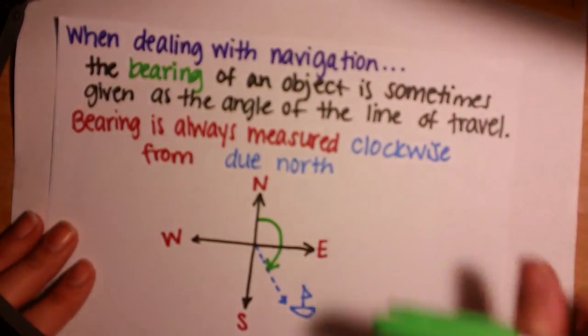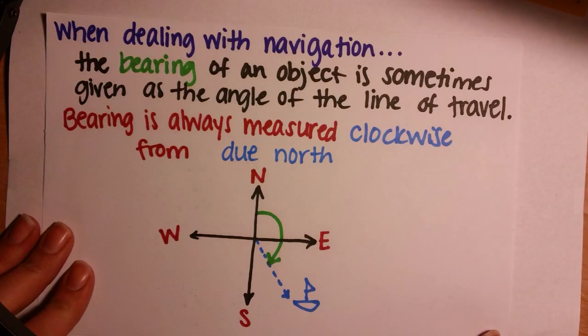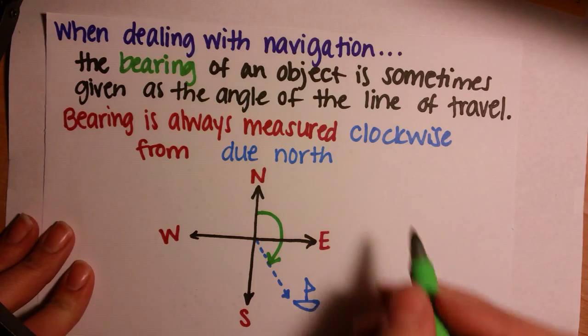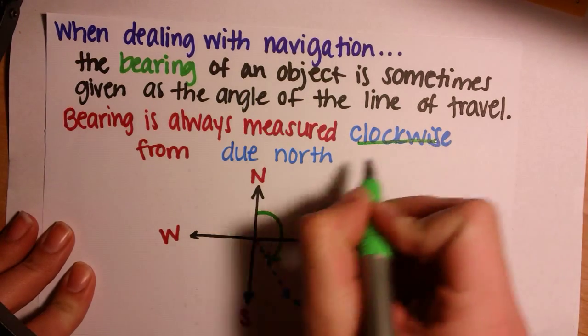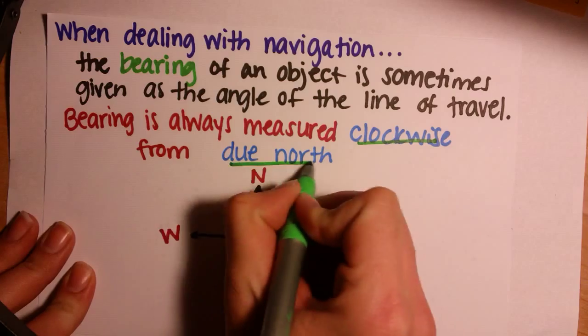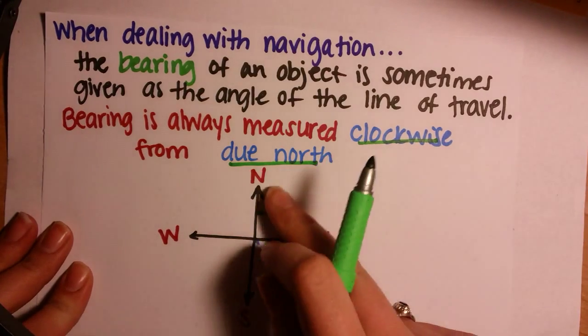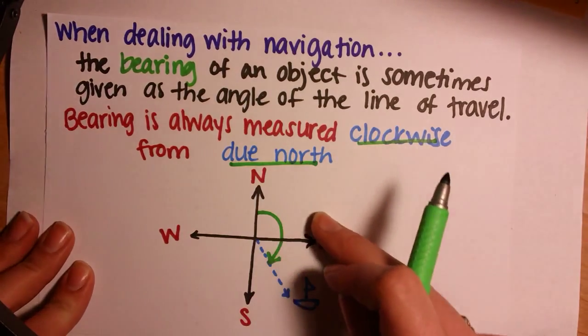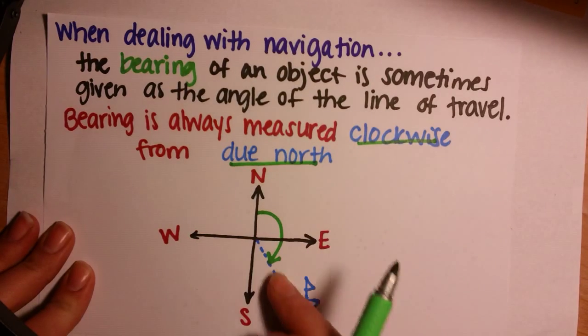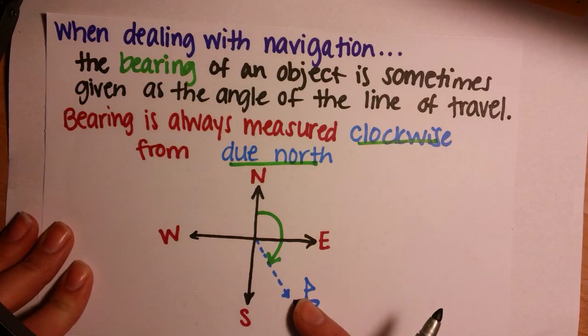Now, when dealing with navigation, the bearing of an object is sometimes given as the angle of the line of travel. Bearing is always measured clockwise from due north. So you start at due north, and you measure clockwise down to the line of travel. And this boat is traveling somewhat southeast.